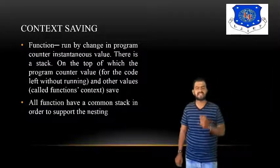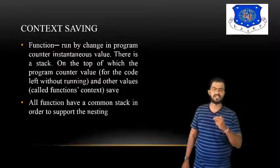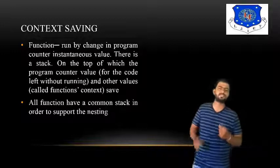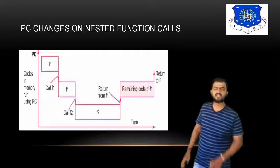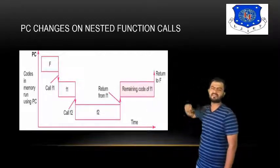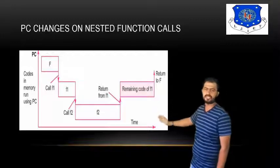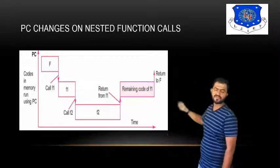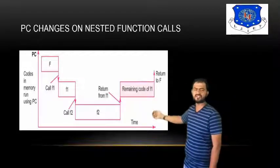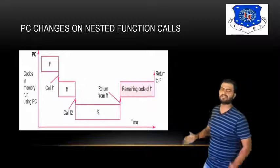Context switching for functions runs by changing the program counter's instantaneous value. There is a stack on top of which the program counter value is saved when another function is left without completing. All functions share a common stack. On the x-axis is time and y-axis is the program counter. For nested functions f, f1, and f2: calling f1 executes it, then goes to f2, executes f2, returns to f1, then returns to f.